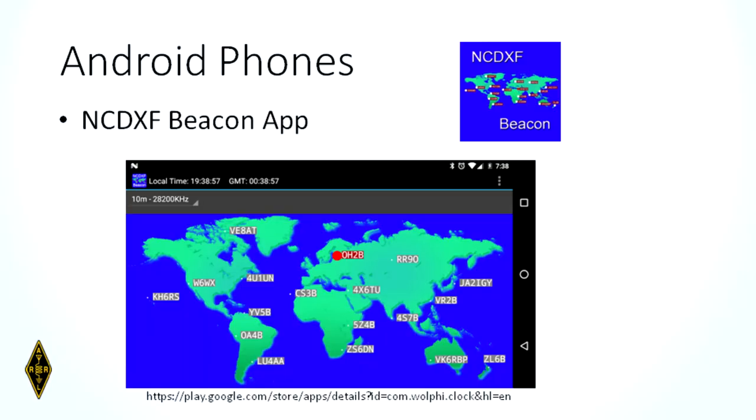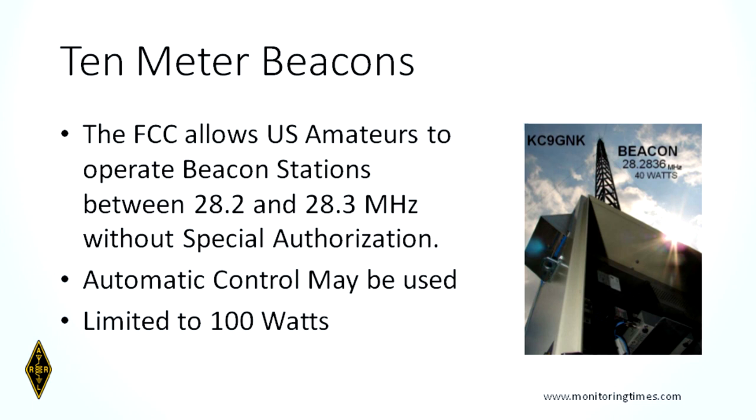You don't have to buy the clock from MFJ if you've got a smartphone — the Northern California DX Foundation has an app that does the same thing. Can you have your own beacon station? Not without special FCC authorization, except on 10 meters. Without any special authorization, you can put your own 10-meter beacon on the air in the spectrum space between 28.2 and 28.3 MHz. You may use automatic control and you're limited to 100 watts. Other amateurs can listen for your beacons and write a reception report. So if you've got the urge to beacon, you can try it on 10 meters.